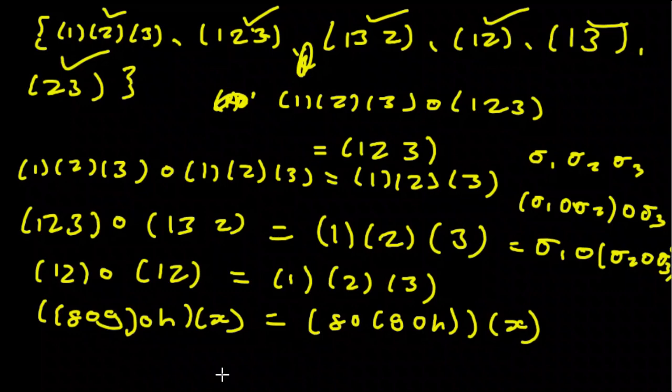So we have associativity, we have closure, we have inverses, and we have identity. So this is a group, and we call this group S3.